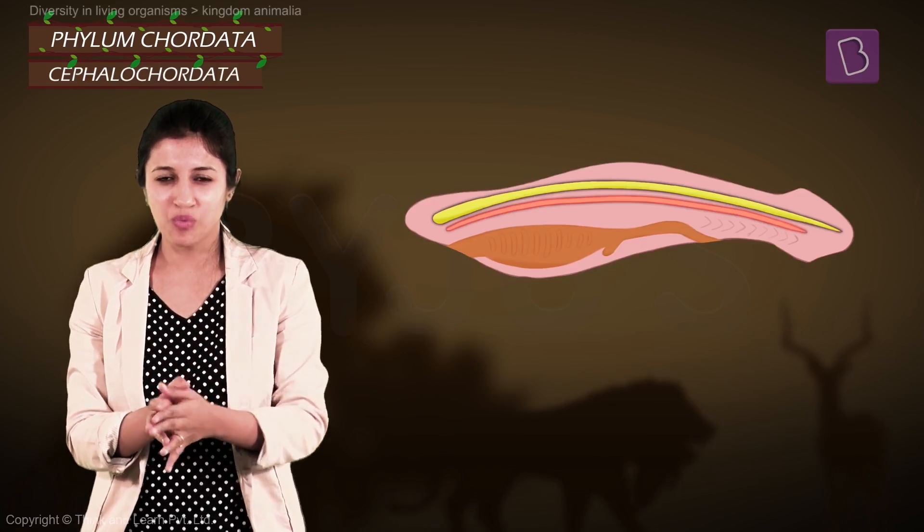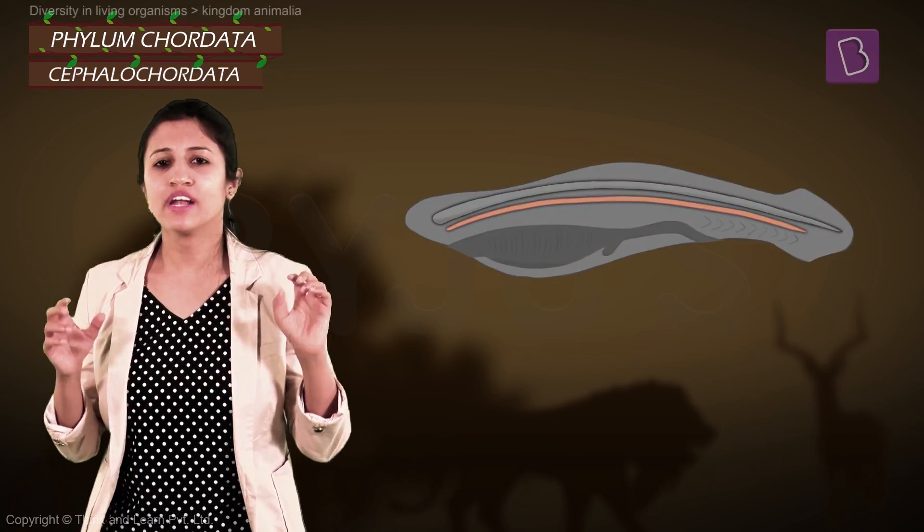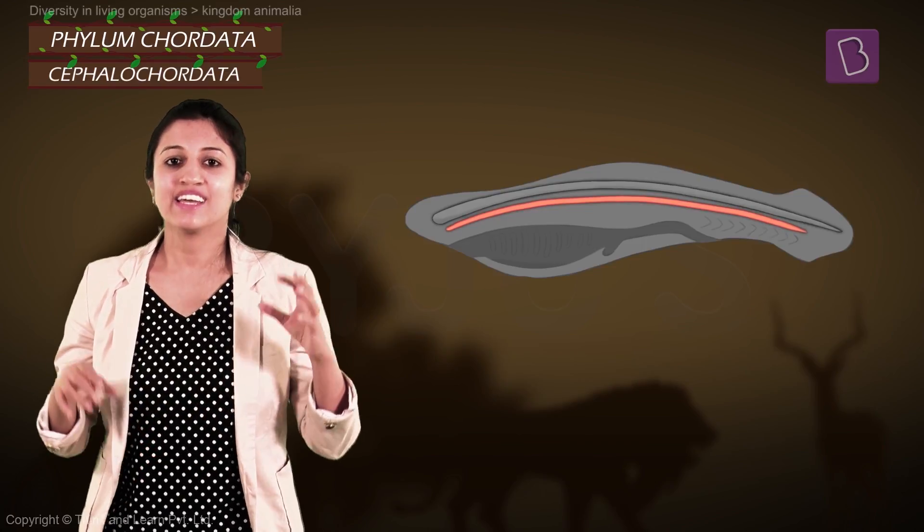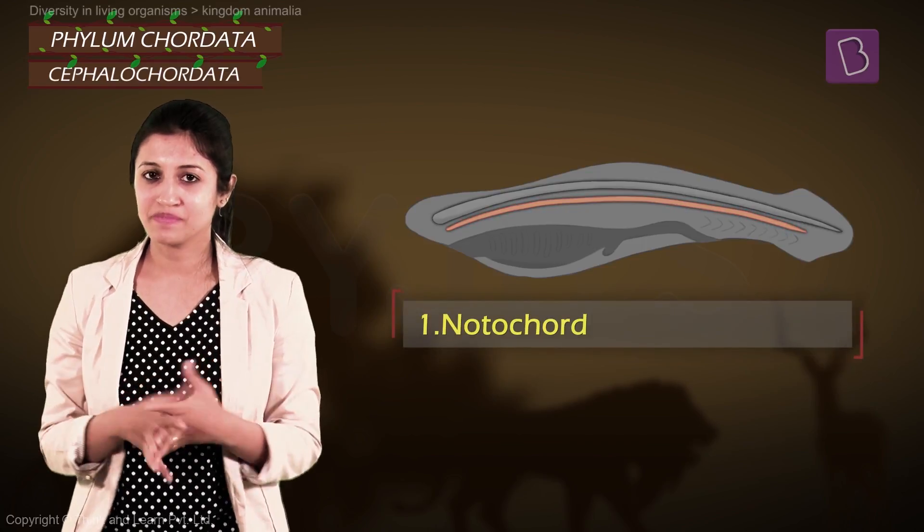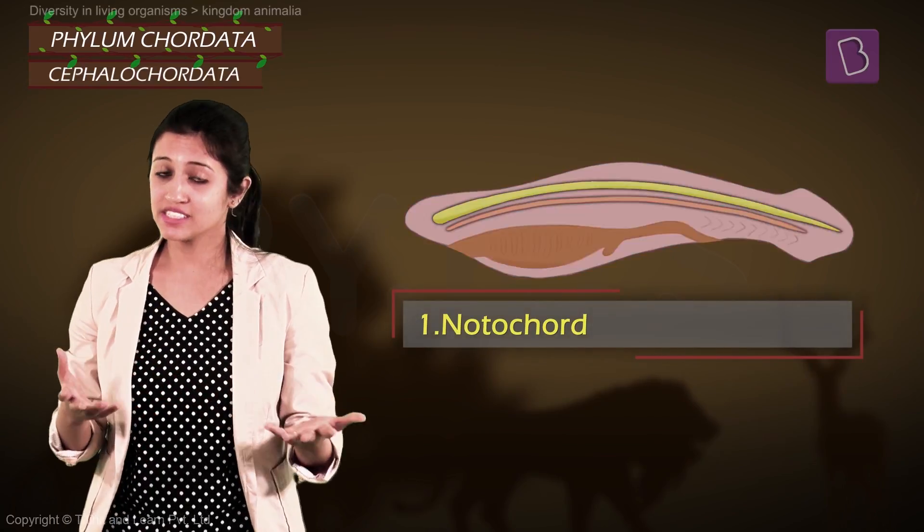So I'm sure you're guessing what is the first feature? Yeah, they have a spinal cord or at least something that looks like a spinal cord that is called a notochord, which is kind of a primitive form of a spinal cord. And yes, we have a notochord too.